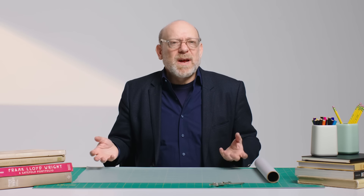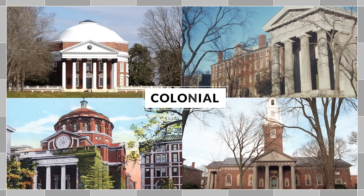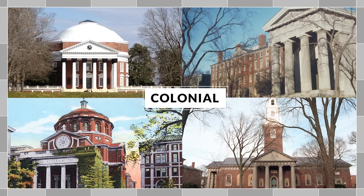Even though almost all universities share these elements, campus architecture comes in a wide variety of styles. Let's take a look at some of the most common styles of collegiate architecture in the U.S. First up: the colonial style. The first university founded in the United States was Harvard in 1636.